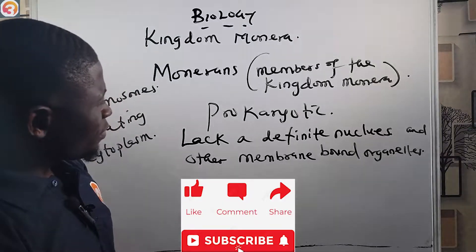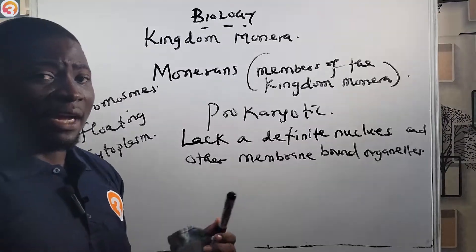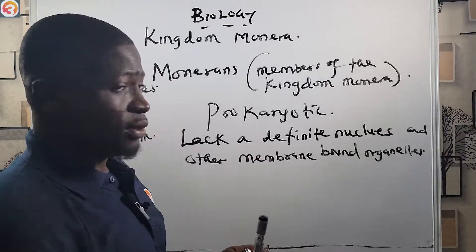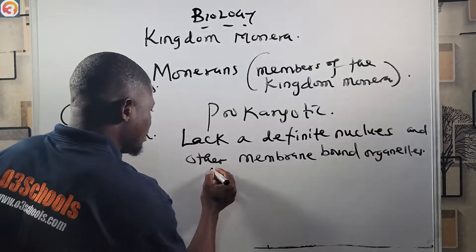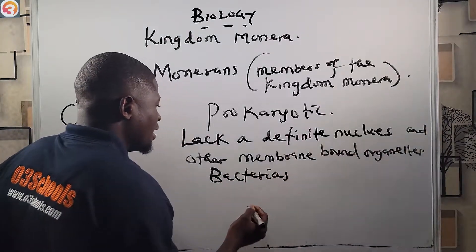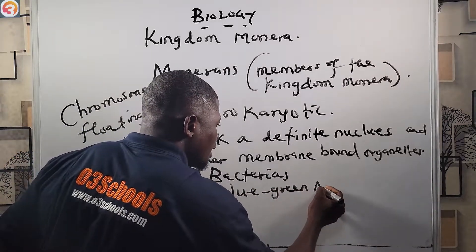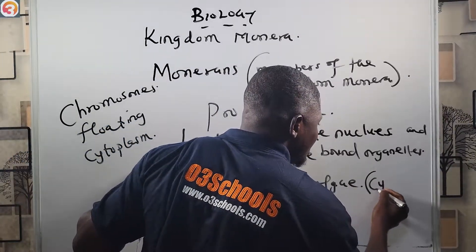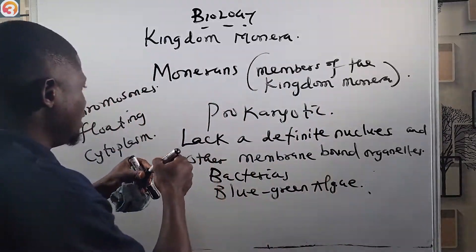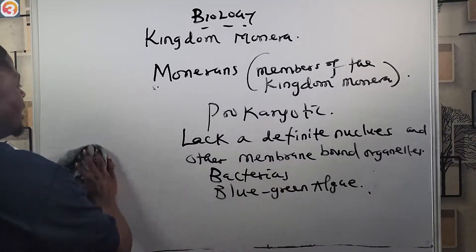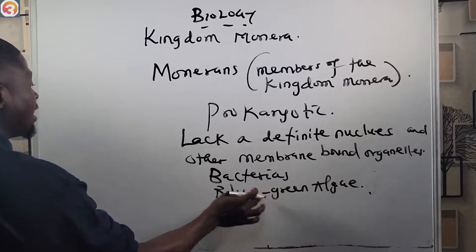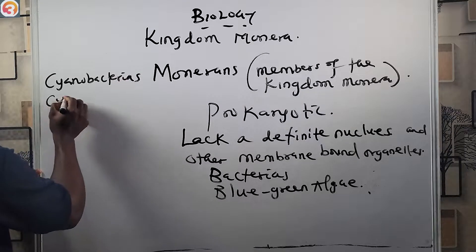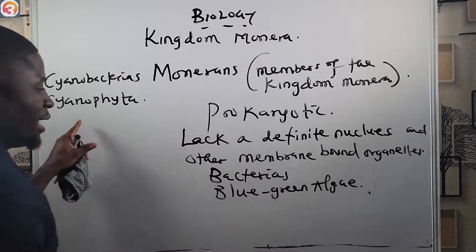Monerans consist of two groups: bacteria and blue-green algae. The blue-green algae are also called cyanobacteria, or cyanophytes — it is the same name.